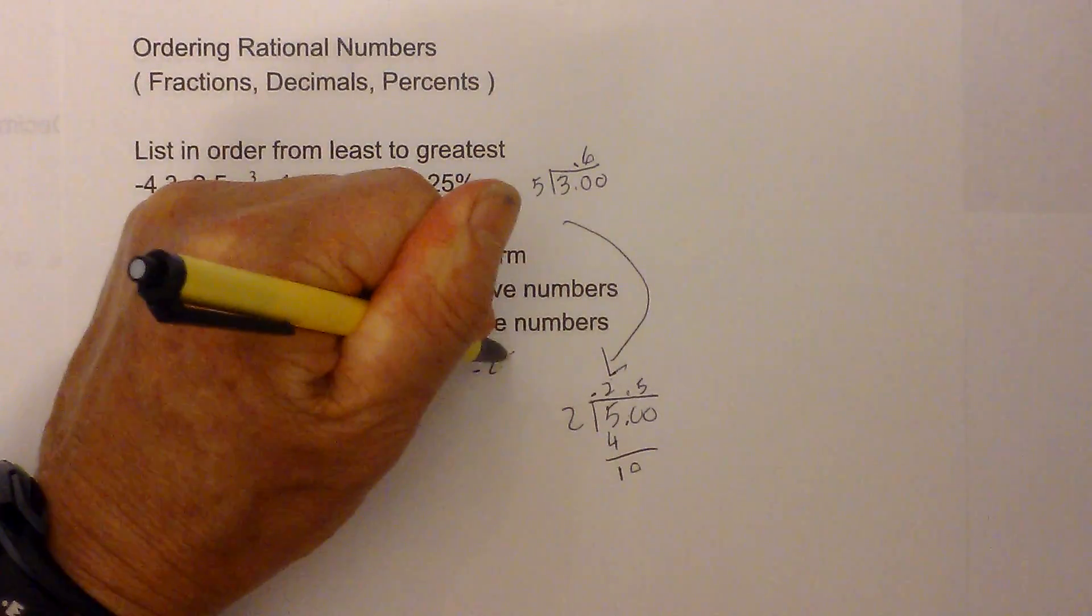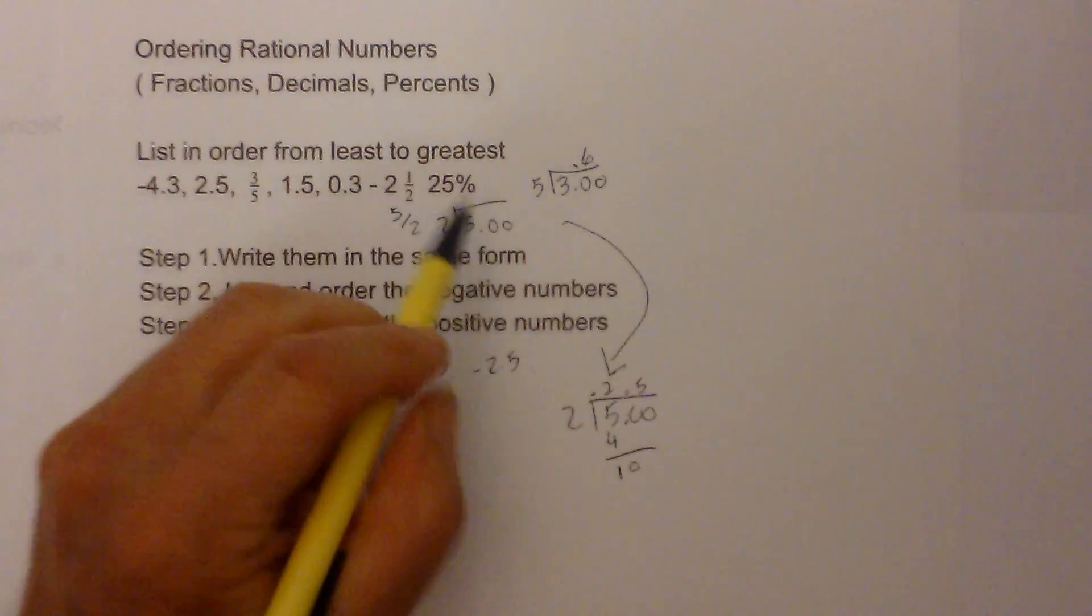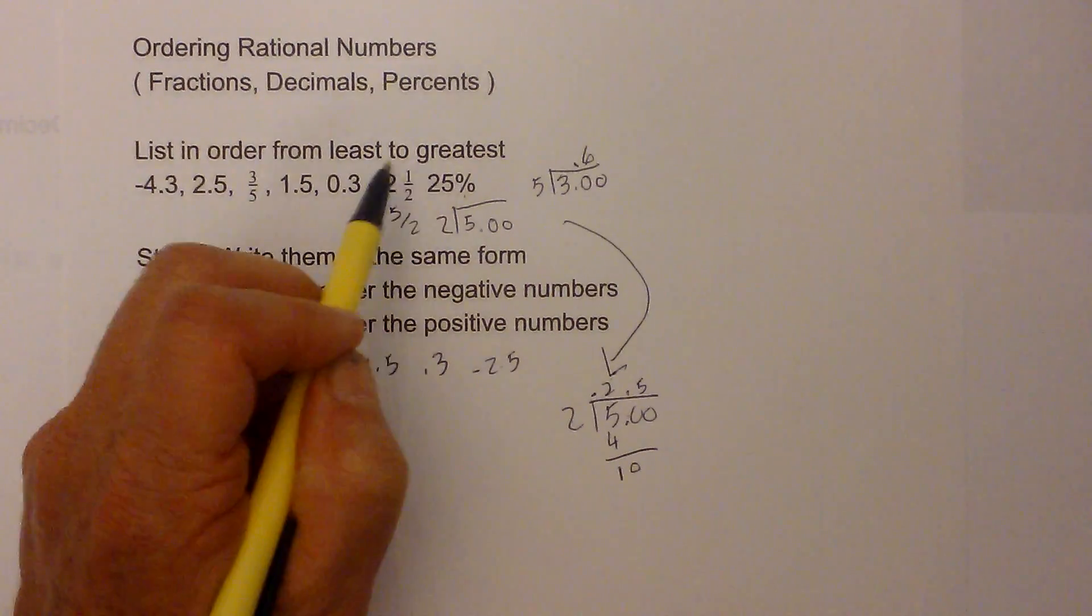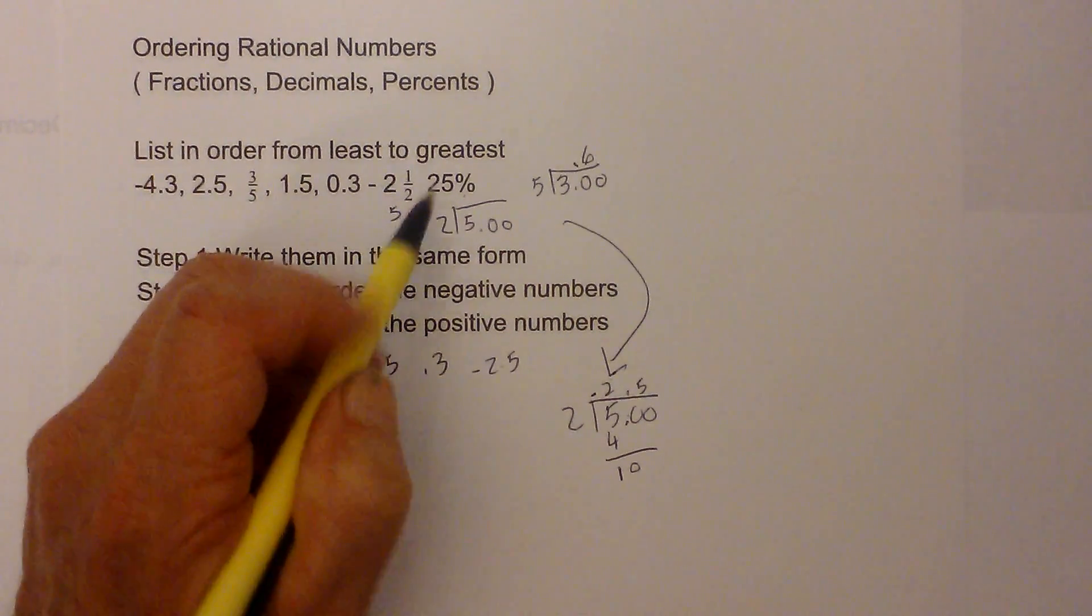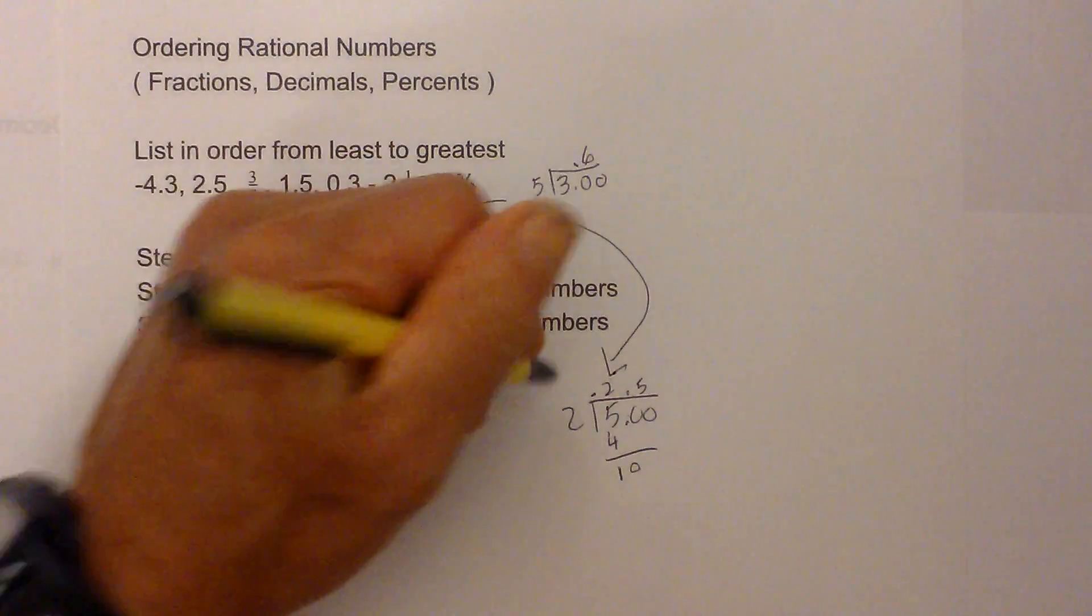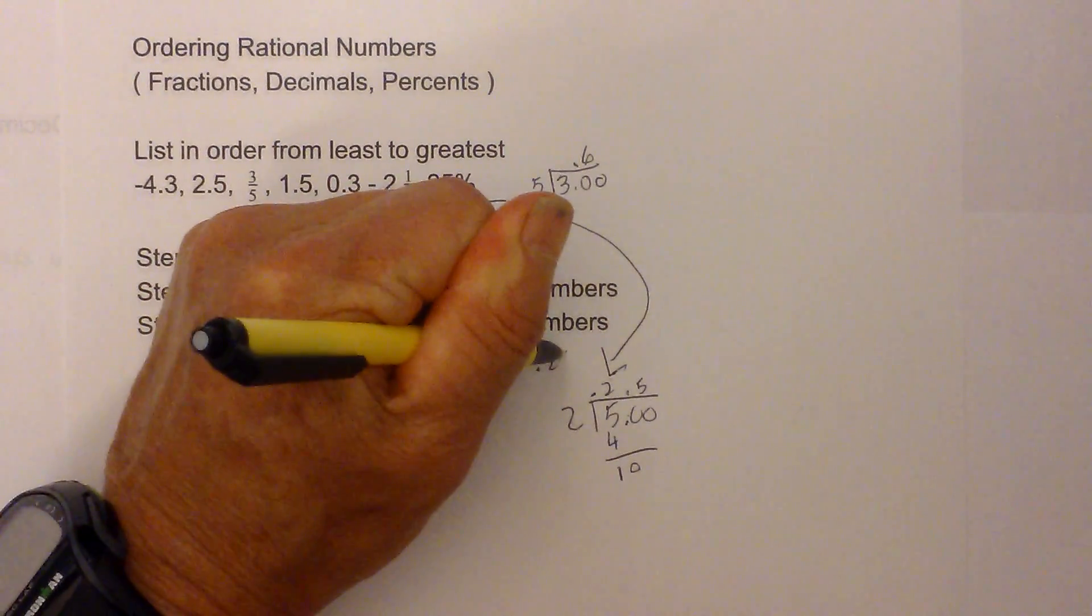And then for 25% to change a percent to a decimal, you divide by 100, or you can just move the decimal two places to the left, so that becomes 0.25.